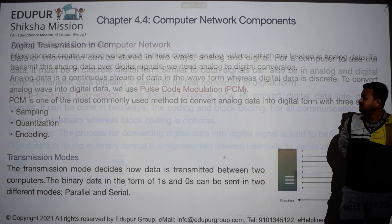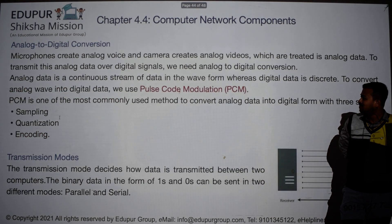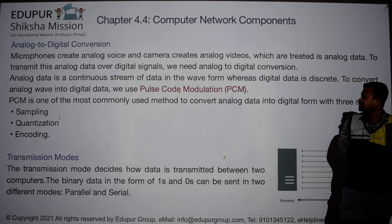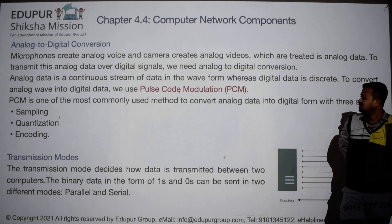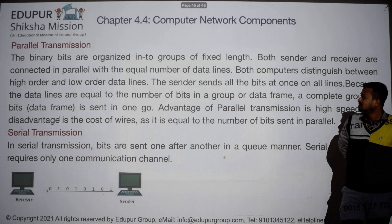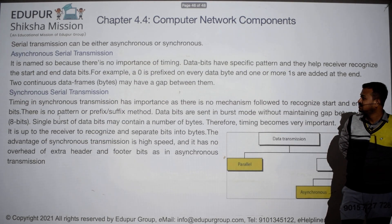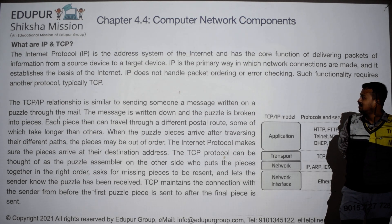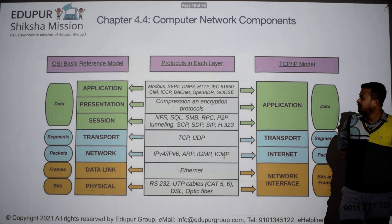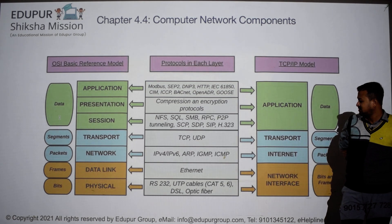Data transmission — this is a very long topic in computer network: analog, digital, conversion, parallel transmission, asynchronous, synchronous, IP, TCP. Transmission mode data — this is the last part.